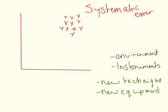Another type of error is a systematic error, and these are quite problematic because all of the data looks as if it's in the same place — it's a problem with every single data point. Whereas they should all be clustered nicely down here, there could be a problem with the environment or the equipment which means all the data is clustered up here instead. Just doing repeats won't get rid of this type of error. You're going to need a new technique, a new method, or some new equipment. Unfortunately, sometimes this does happen in science and you just have to chalk it up and move on.